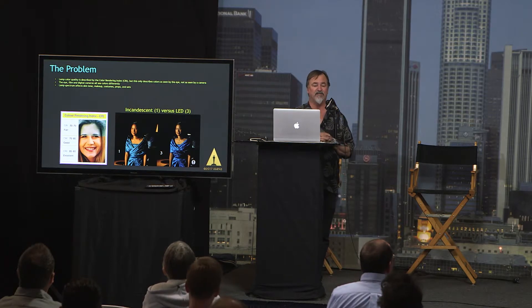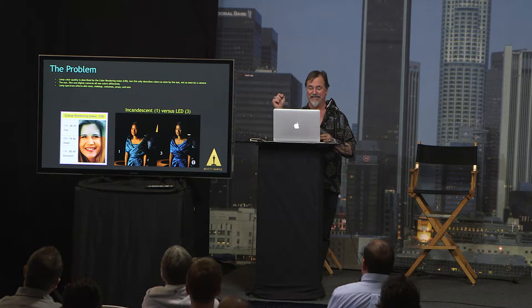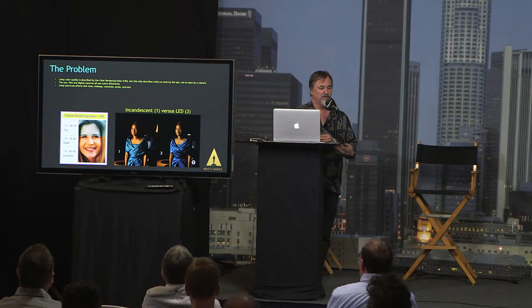You can see a little bit of the difference here between incandescent lighting and LED lighting. Here are some color rendering indexes on some of the different qualities of lights. A CRI of 50 to 70 is a fair number. 70 to 80 is a good number. 80 to 90 is an excellent number. But CRI is not sufficient for the purpose of lighting.